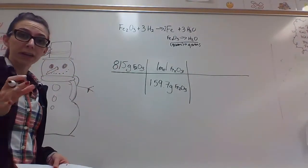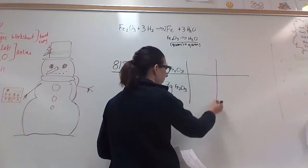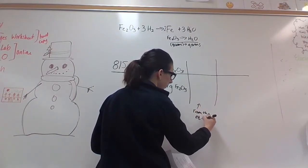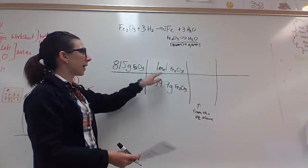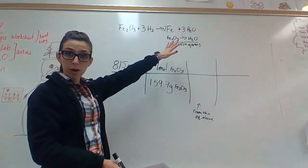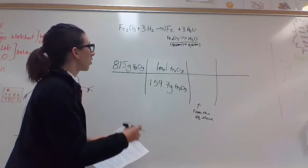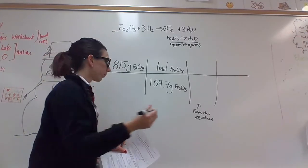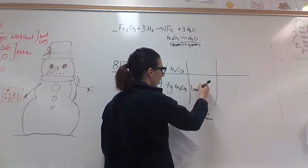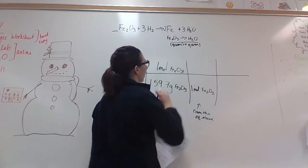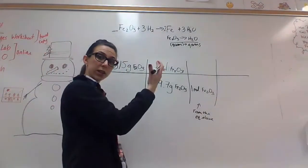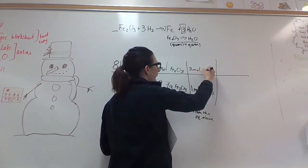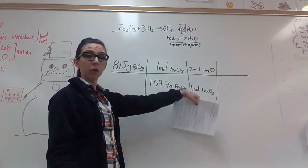This is the part where we get into ratio — you're going to use this next section from the equation above. You want to cancel out one mole and get to how many moles are going to be in water. Before iron oxide there's no number, so that means one mole of iron oxide in our equation. Then you look at the coefficient for water — I see a three — so there are three moles of H2O for every one mole of iron oxide.